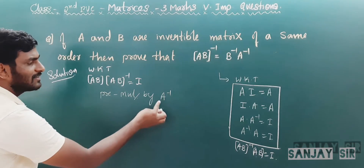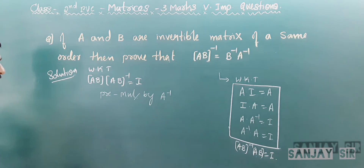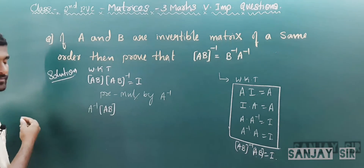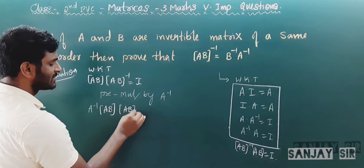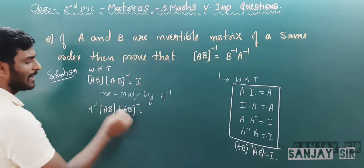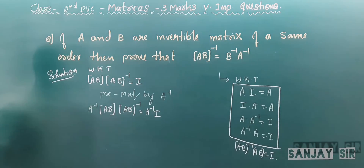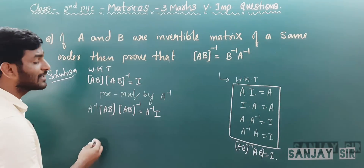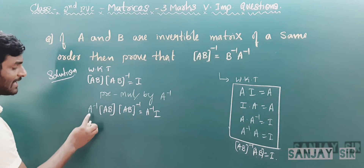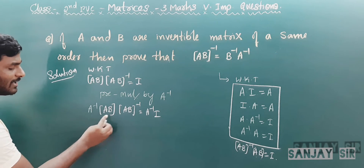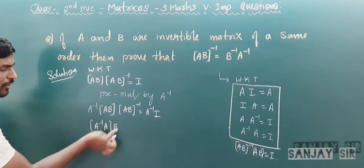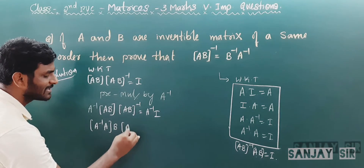We are multiplying by A⁻¹ on the left-hand side. So on the left-hand side, A⁻¹ into AB, then the remaining terms AB⁻¹ as it is. We are multiplying A⁻¹ to the left-hand side. Using the associative property of multiplication, A⁻¹ · AB can be written as (A⁻¹ · A) · B. The remaining step stays as it is.